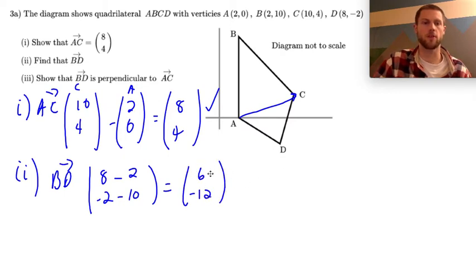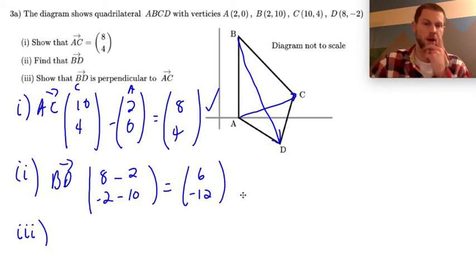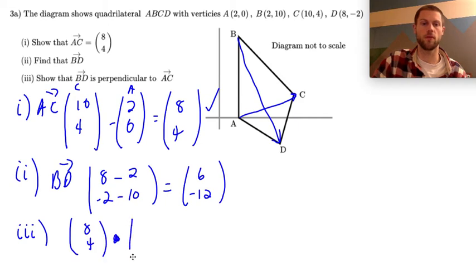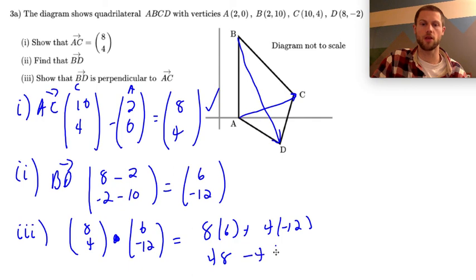And then finally I want to show that these two vectors BD and AC are perpendicular. So let's take the dot product between the two of them. I want to dot (8,4) with (6,-12). So that's going to be 8 times 6 plus 4 times -12. So this is 48 minus 48 and that is zero. So these two vectors are perpendicular.